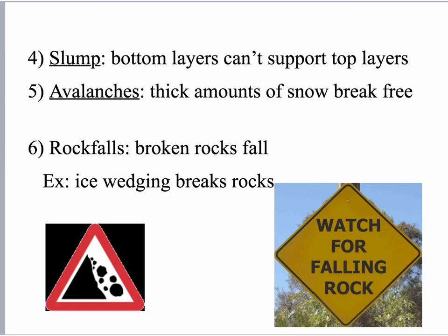The other three types are slump, avalanche, and rock falls. Slump — I call it Jenga — the top is not supported by the bottom anymore and it just slumps down and drops. An avalanche is probably the most famous: up in the snowy mountains, a giant mass of snow comes flying down the hill. And rock fall — the name tells you what it is — chunks of rock break off and fall. You'll see signs for that up in the UP or down in Tennessee or Kentucky, generally because of ice wedging.